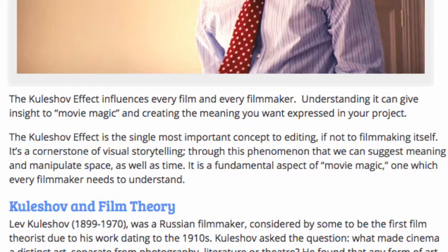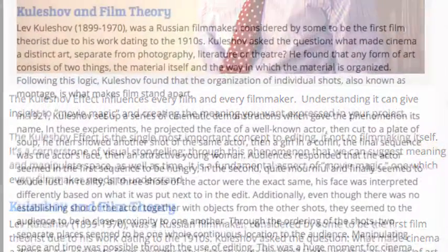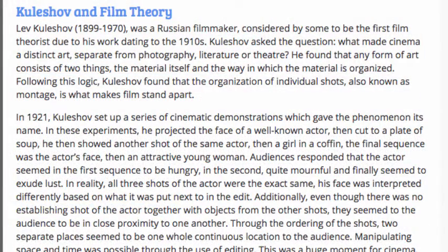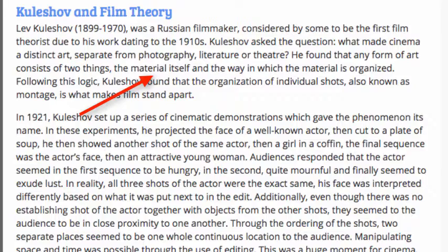Lev Kuleshov was a Russian filmmaker, considered by some to be the first film theorist due to his work dating to the 1910s. Kuleshov asked the question: what made cinema a distinct art, separate from photography, literature, or theater? He found that any form of art consists of two things: the material itself, and the way in which the material is organized.